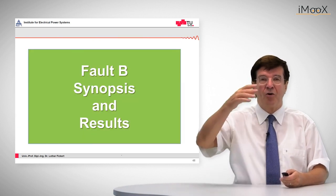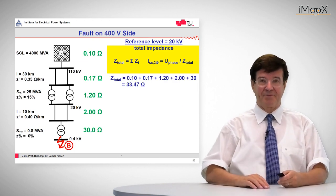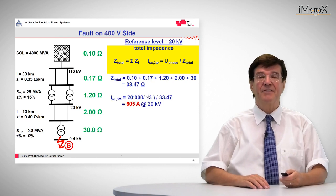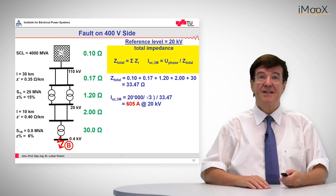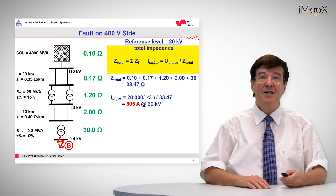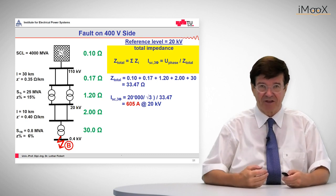Now we add all these impedances up, obtain a total series impedance of 33.47 ohms, and divide the phase voltage by this value. The outcome is 605 amps on the 20 kV voltage side, which is our reference voltage level.